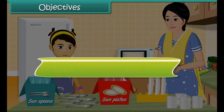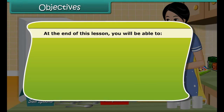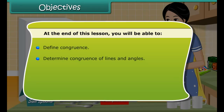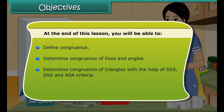Objectives. At the end of this lesson, you will be able to: define congruence; determine congruence of lines and angles; determine congruence of triangles with the help of SSS, SAS, and ASA criteria; and determine congruence of right-angled triangles with the help of the RHS criterion.